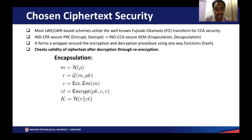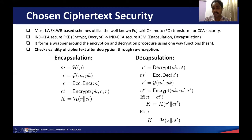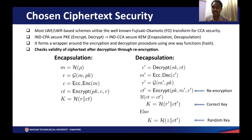In the decapsulation procedure, we first perform a decryption of the ciphertext to get back the codeword C' and decode it back to the message M'. Then we repeat the same steps as in encapsulation: we hash the message with the public key to get R' and perform the re-encryption procedure. We compare the generated ciphertext with the received ciphertext. If they are the same, then we know the ciphertext is valid; otherwise, it generates a random key. For an invalid ciphertext, we only generate a pseudo-random key, and hence an attacker cannot get any information about the decrypted message for any invalid ciphertext.